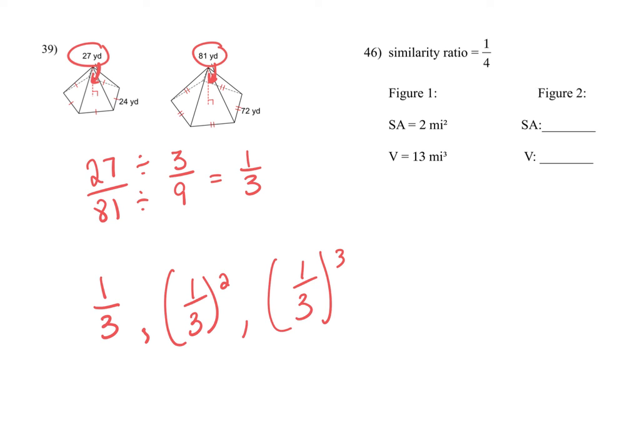So we're going to say one-third. If I will square it, we get one-ninth. If I cube it, I get one over 27. These are my answers. That's all you're doing there. Find the ratio, square it, and cube it.